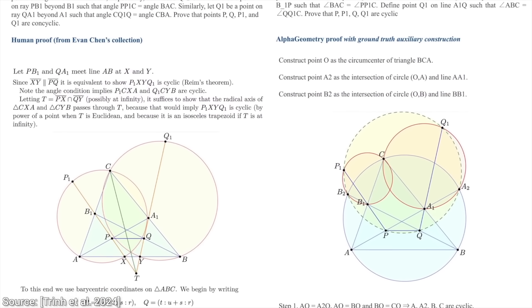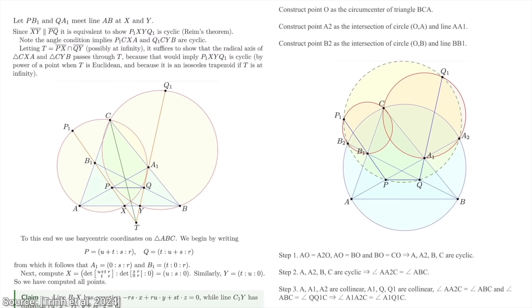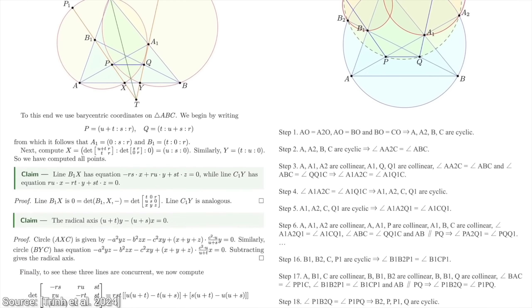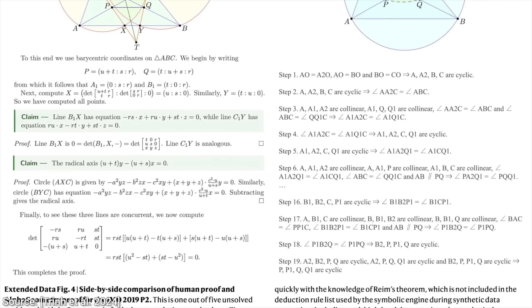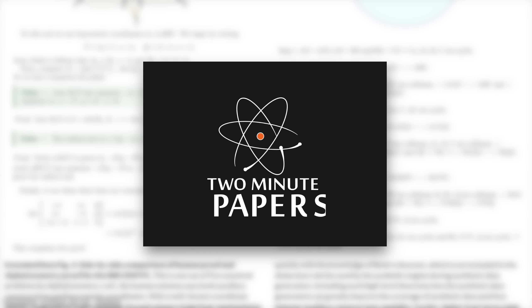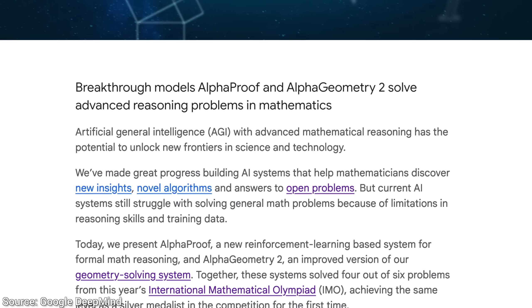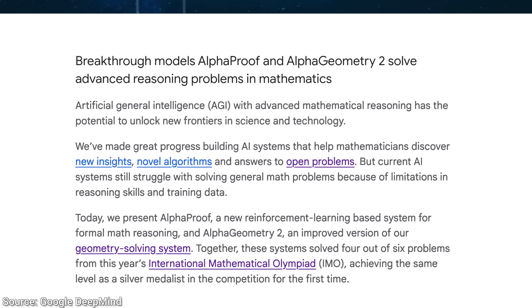So how good are they? Can they solve any of these problems? Or can only humans do that? Or maybe, are they as good as humans? Dear Fellow Scholars, this is Two Minute Papers with Dr. Károly Zsolnai-Fehér. So, Google DeepMind showcased their Alpha Proof and Alpha Geometry II techniques.